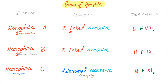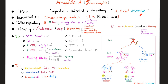If it's X-linked recessive, it's going to be more common in boys. If it's autosomal recessive, remember consanguinity. Hemophilia A is X-linked recessive, almost always males — about 1 in every 10,000 males usually has hemophilia A. The pathophysiology is a problem with the activity of factor 8, which could be due to a deficiency of the factor or an inhibitor — an antibody against the factor. Clinically: deep bleeding such as hemarthrosis, hematomas, etc.